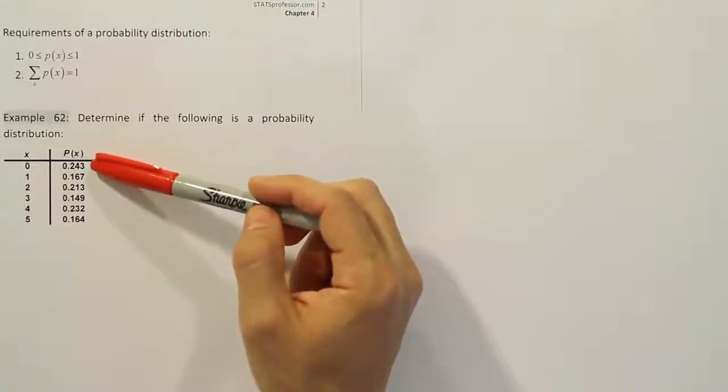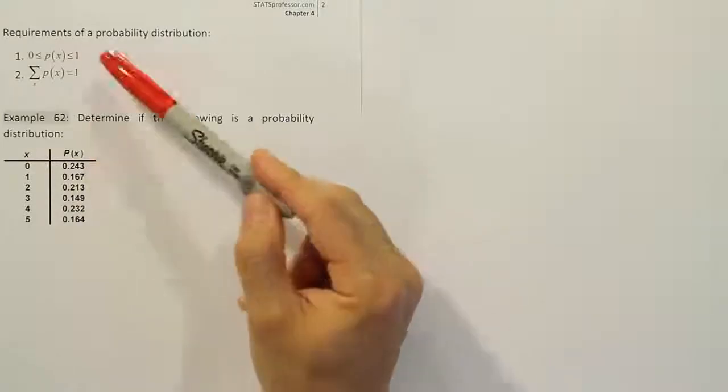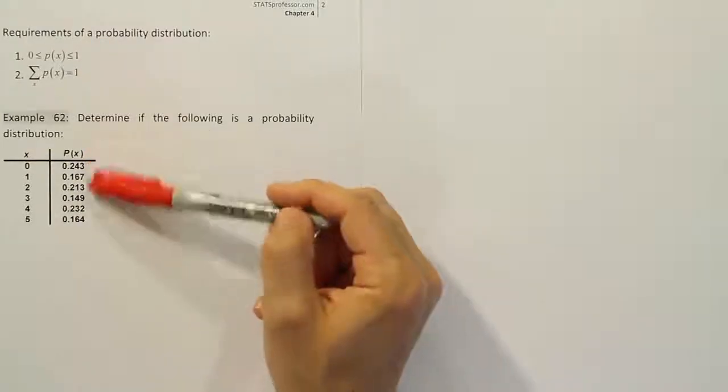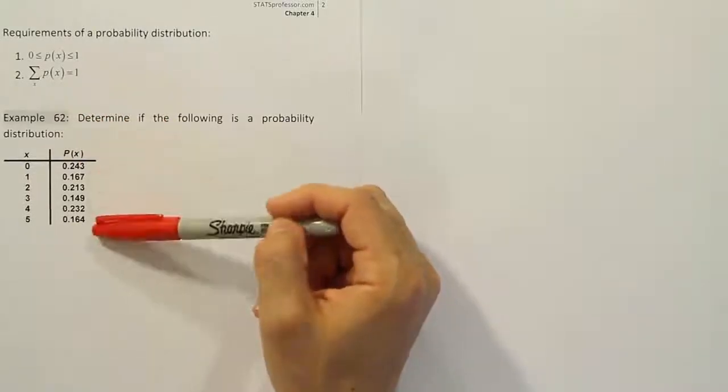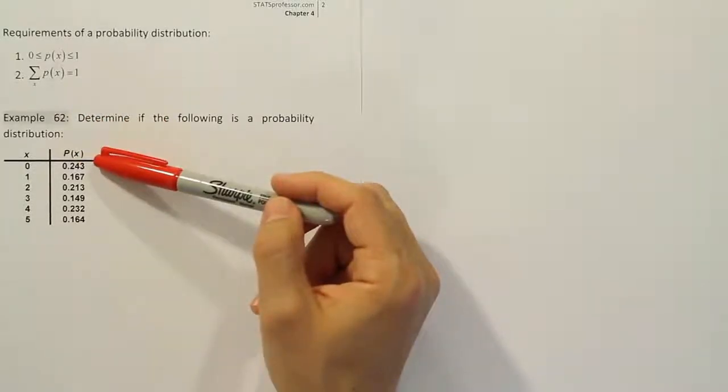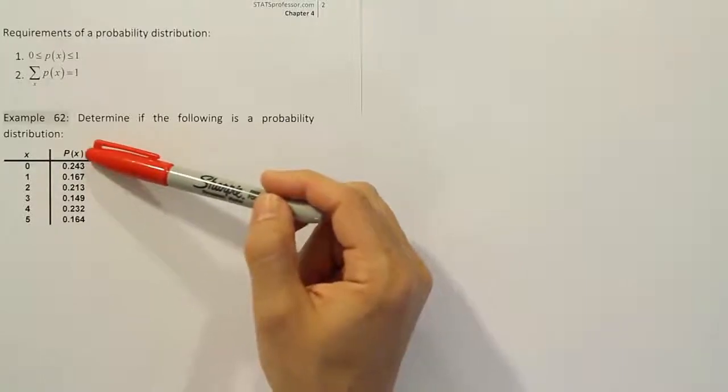So let's check now and see if this is, in fact, a probability distribution. We already checked condition 1. All the probabilities are good in that regard. Let's check to see if they add up to 1. We could use a calculator to type all these in, but we could do it out loud just kind of in our heads here using rough numbers.